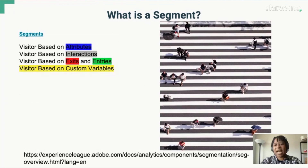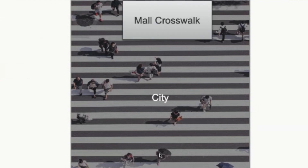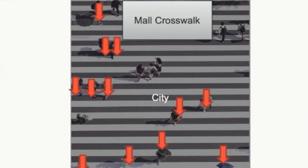Segments can be based on the following values. The first one would be visitor based on attributes — for this example, we have a city. Visitor based on interactions — for this example, we are using the mall crosswalk as the interaction. Visitor based on mall exits, which is the down red arrow showing people leaving the mall.